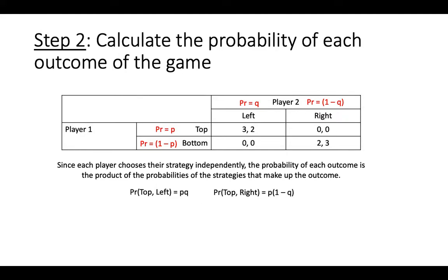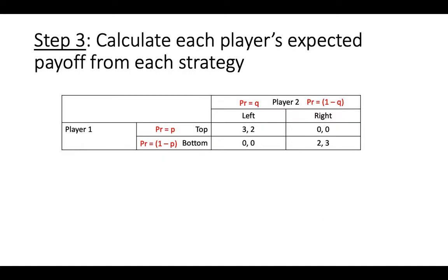The probability of top right is p times the quantity 1-q, the probability of bottom left is the quantity 1-p times q, and the probability of bottom right is the quantity 1-p times the quantity 1-q.